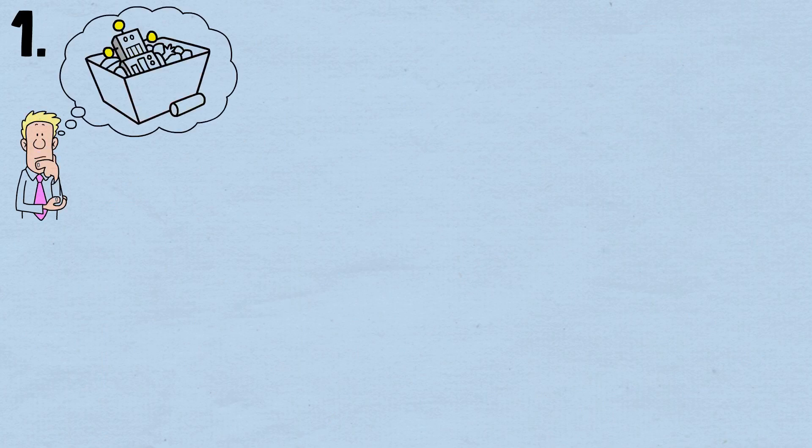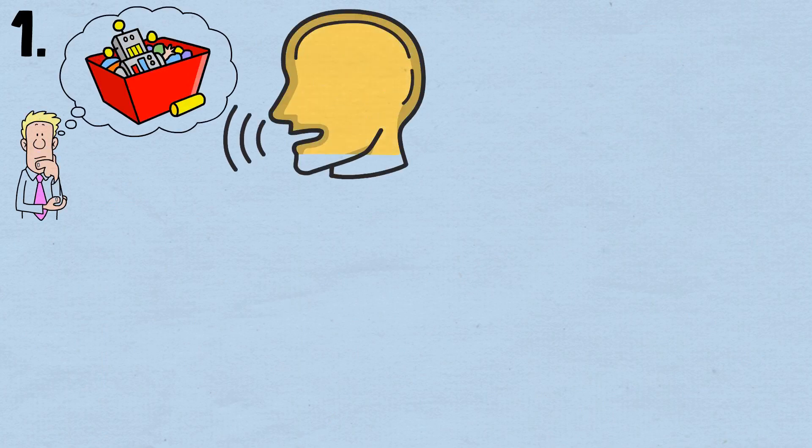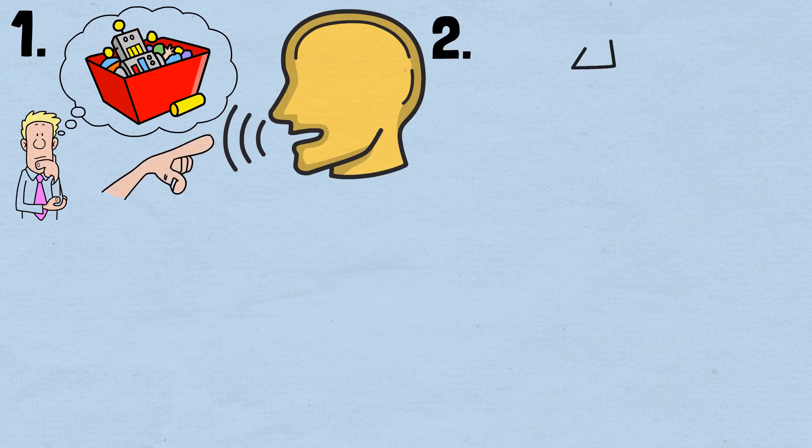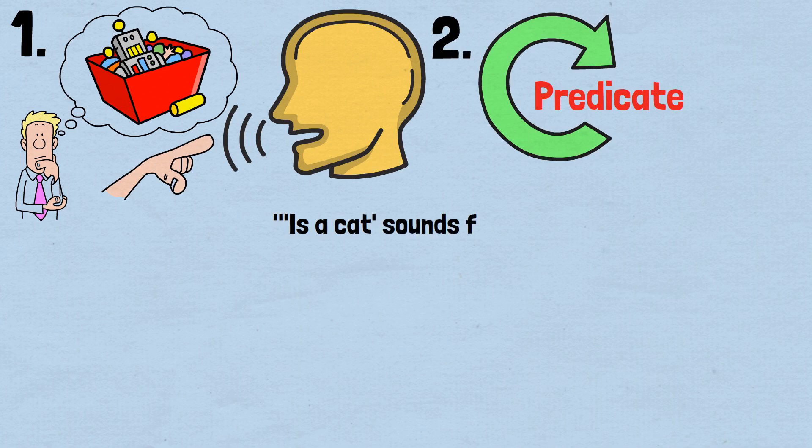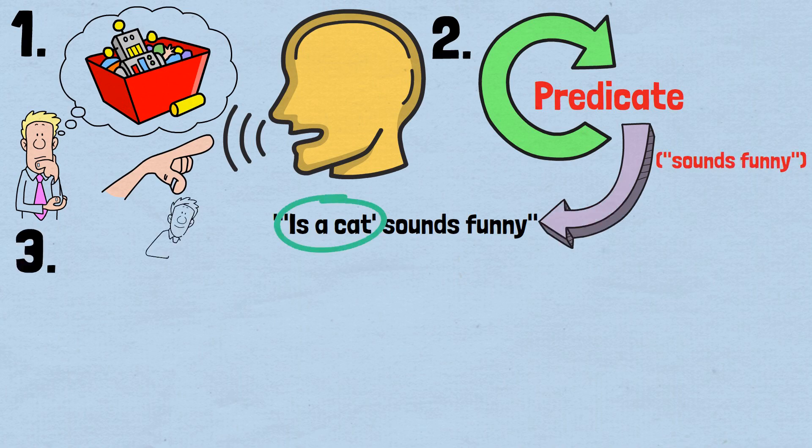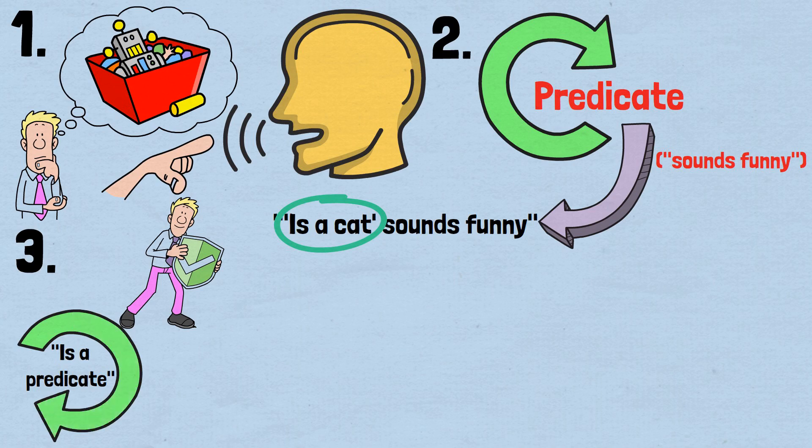1. There can be a predicate for any imaginable characteristic of a thing. Anything you can say about something? There's a predicate for that. 2. We can predicate things of predicates. For example, 'is a cat' sounds funny, is a sentence where we're predicating something, 'sounds funny,' of a predicate, 'is a cat.' 3. Predicates can be true of themselves. 'Is a predicate' is true of itself. 'Is a predicate' is indeed a predicate. But some predicates are not true of themselves. 'Is a cat' is not a cat. So that predicate is not true of itself.